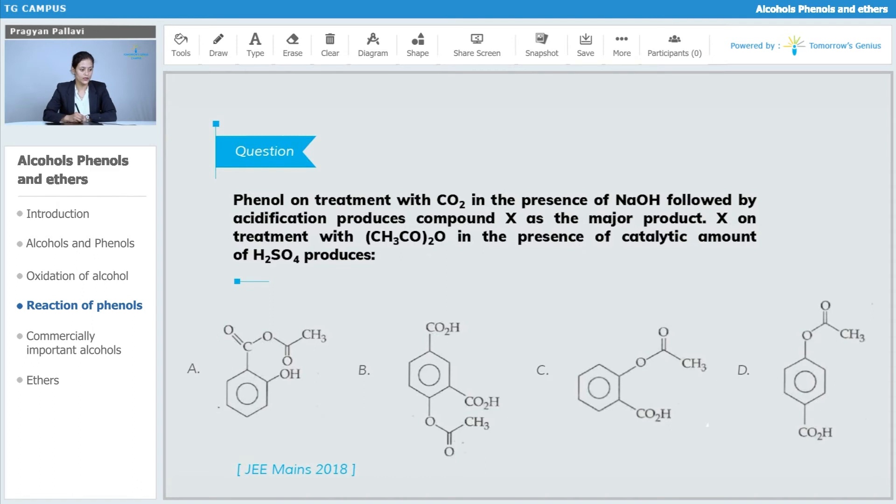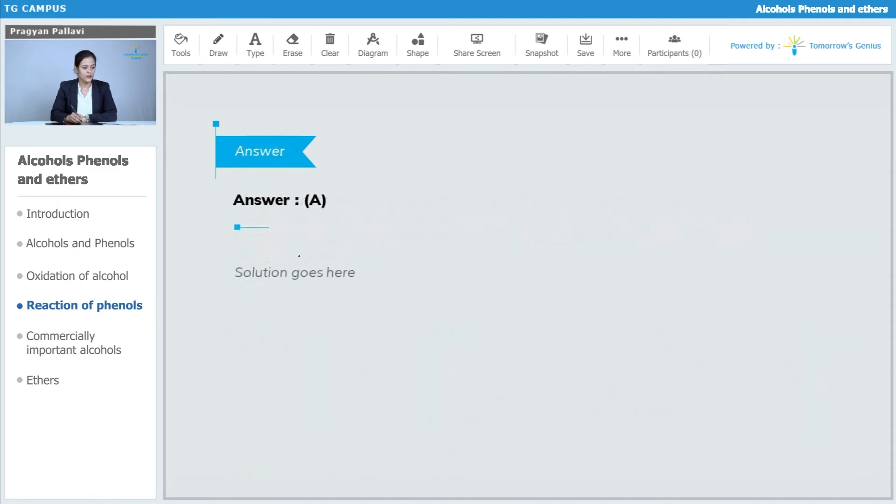Let us see this reaction. When we are having phenol, which on treatment with sodium hydroxide is going to form sodium phenoxide. And then, upon reaction with carbon dioxide and H+, this sodium phenoxide is giving us salicylic acid.